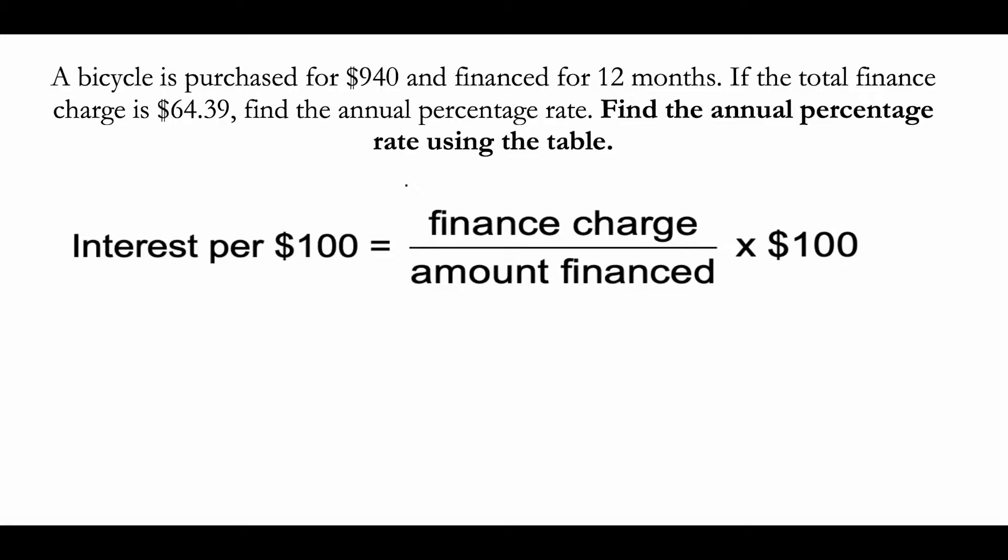A bicycle is purchased for $940 and financed for 12 months. If the total finance charge is $64.39, find the annual percentage rate.